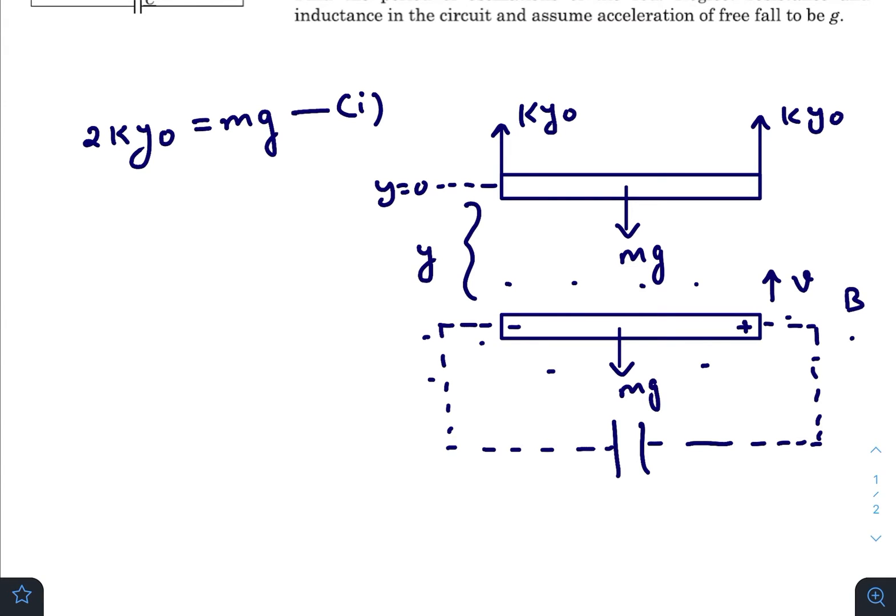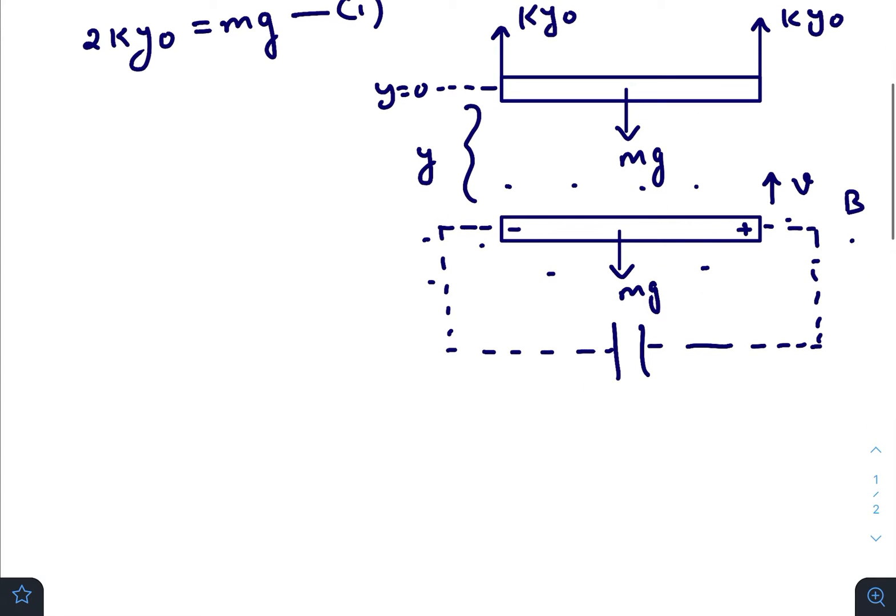This battery is connected to a capacitor and this will result in charging of this capacitor. The moving conductor in presence of a magnetic field will behave as a battery of emf BvL. Due to this, the energy that will be stored inside the capacitor will be half C times BvL whole square.